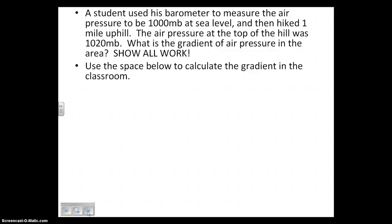The student used his barometer to measure the air pressure to be 1000 millibars at sea level. The air pressure at the top of the hill was 1020 millibars. I have to say that's actually a little weird - usually air pressure is less as you go up in altitude. In this case it wasn't, that's okay. There could be some local variations. What is the gradient of air pressure in the area? So notice this is not elevation anymore, it is not temperature anymore. We're using new units, which is okay.